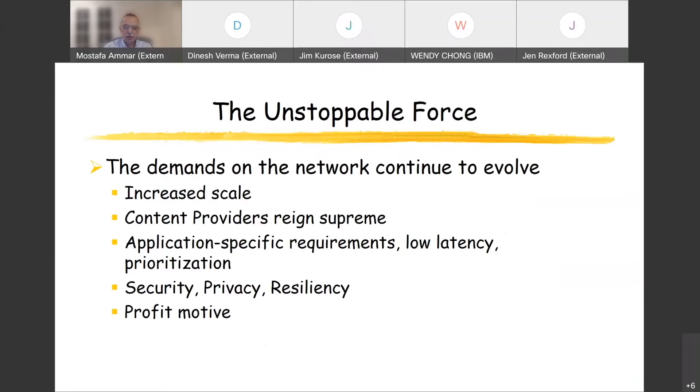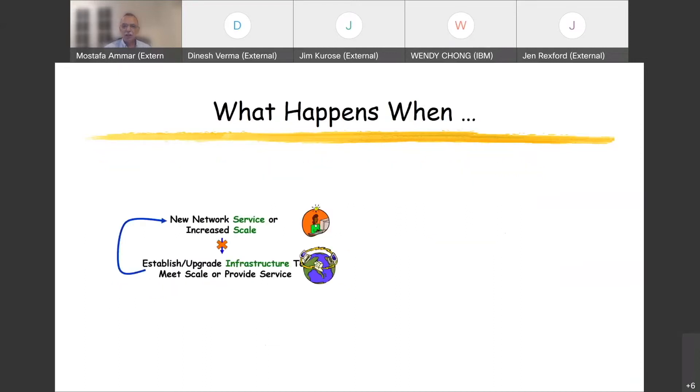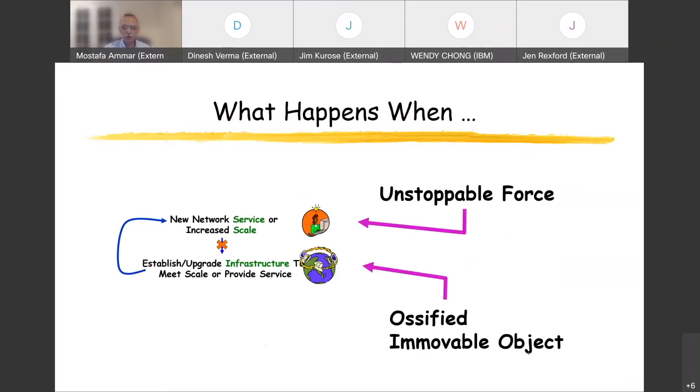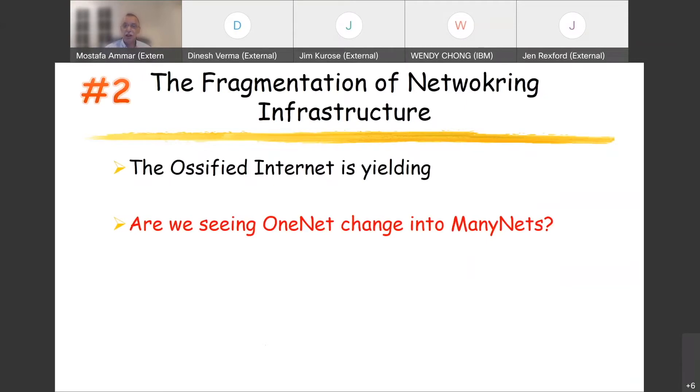I think we've heard it also from Jim that basically the demands of the applications are paramount and they are probably the unstoppable force. You can't just get in their way. There is certainly always increased scale. There is content provider requirements. They have customers and they have quality of experience requirements. The latency and other requirements. There's a lot of security privacy and resiliency requirement. There's also a very important motive here, which is all these providers need to be making money. So things have to be cost efficient. If you take this unstoppable force, what happens when an unstoppable force meets this immovable object that has just been hard to change. And what I will argue is this is exactly what is causing the Internet or networking in general to yield and change character.